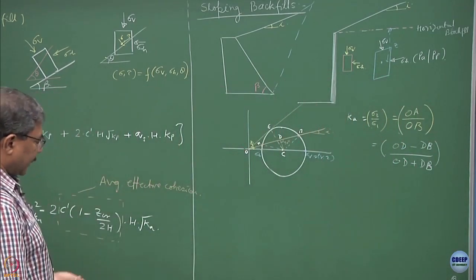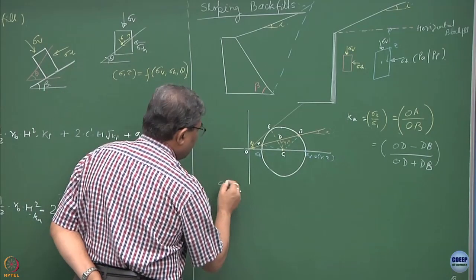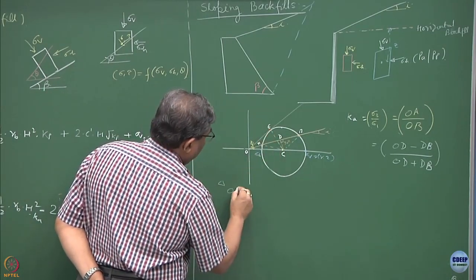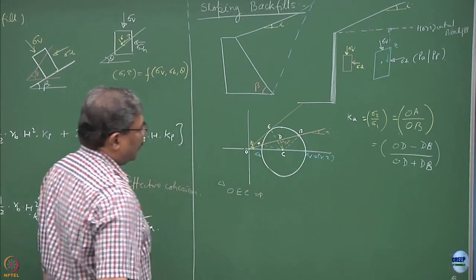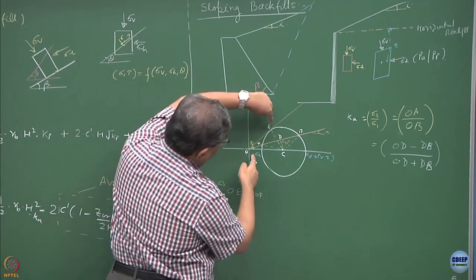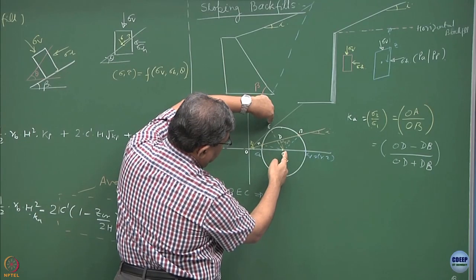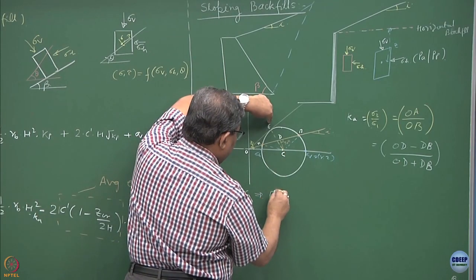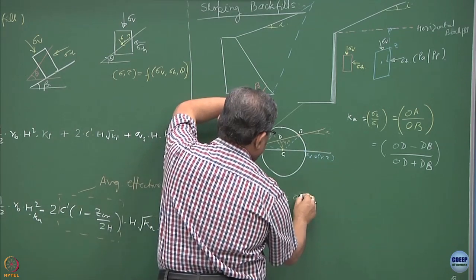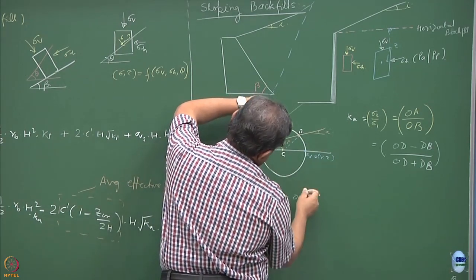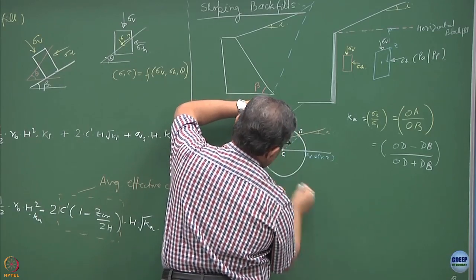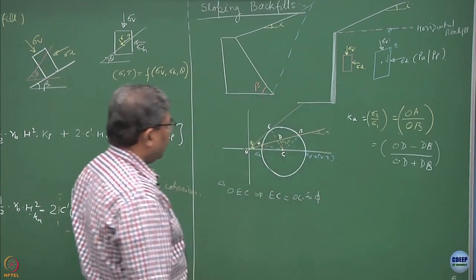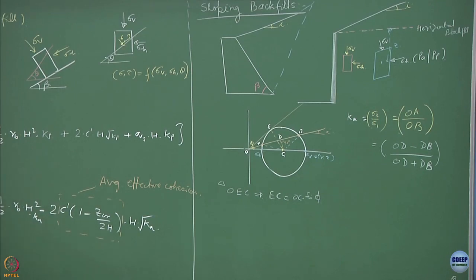From this triangle OEC, what can be obtained? This is phi, OC is common, so EC is equal to OC into sin of phi.